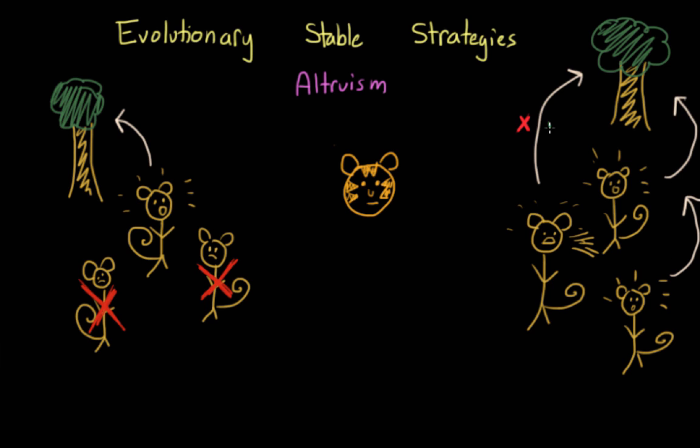And, of course, it's possible that the monkey who makes the call survives as well. And so this actually winds up being a really successful strategy. And I want you to really think about this because it means that altruism actually increases the success of the overall group. So even though it might put one individual at risk, it increases the fitness of the community around it.